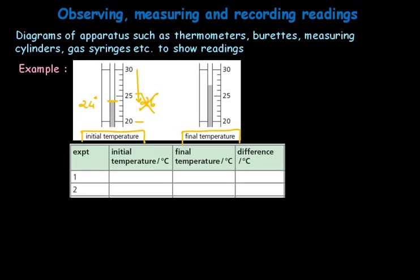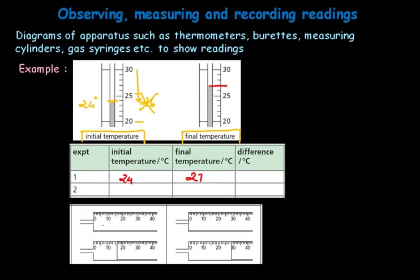You may then be given a table where, looking at various diagrams, you fill in the initial and final temperatures. For example, initial temperature 24°C and final temperature 27°C, and then note the difference. Similarly for gas syringes, the initial reading may be 0 and the final reading 16 or 29 cm³. Always read the diagrams correctly and confirm the reading twice before writing it in the table.